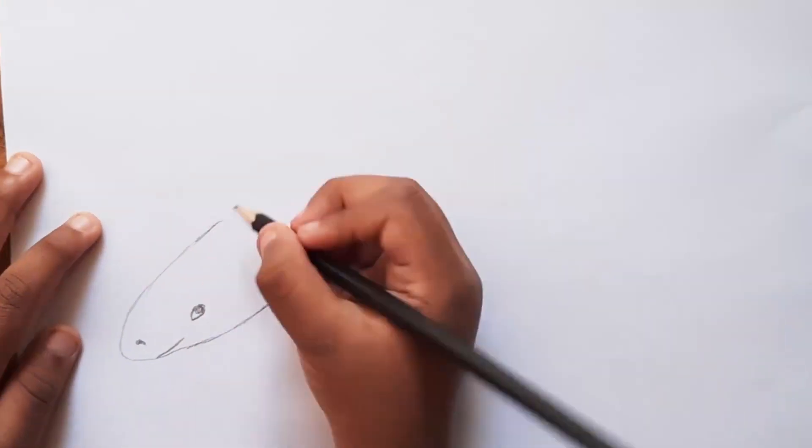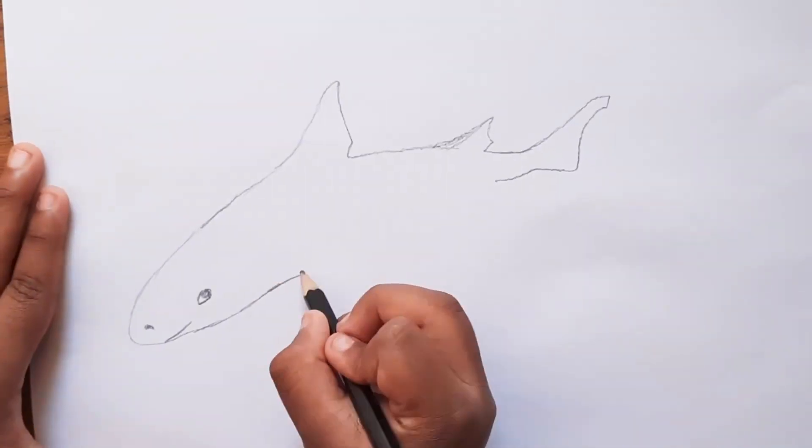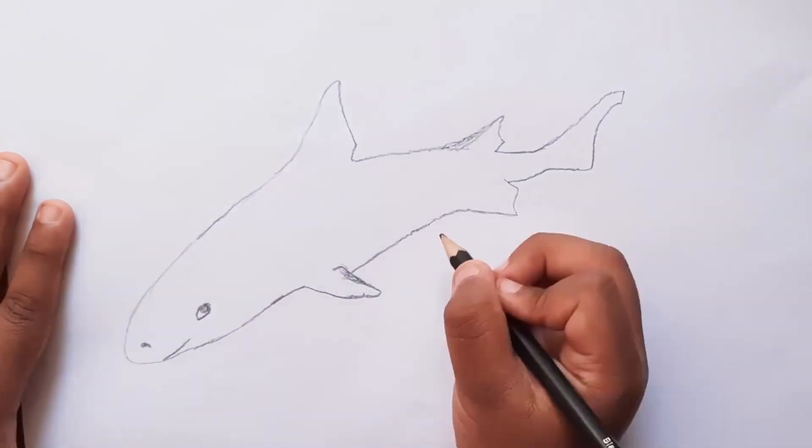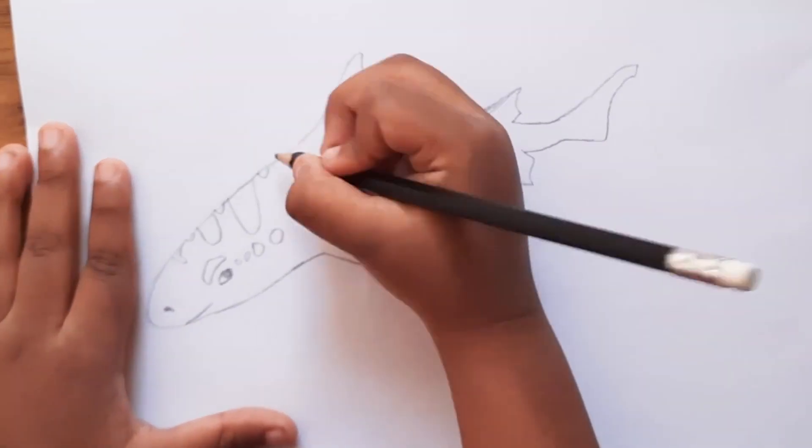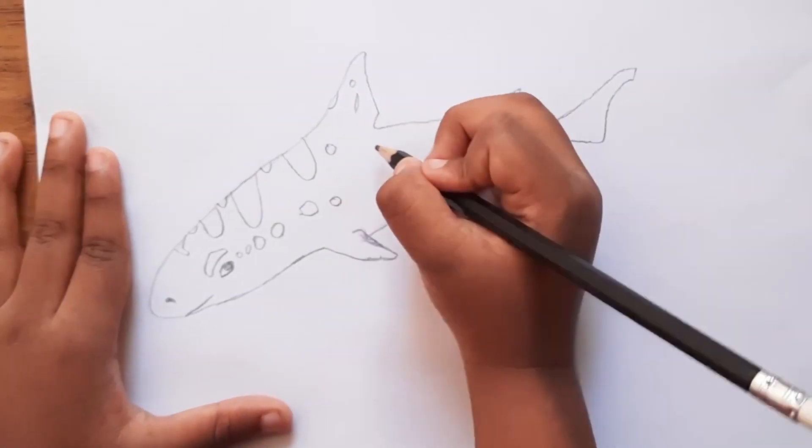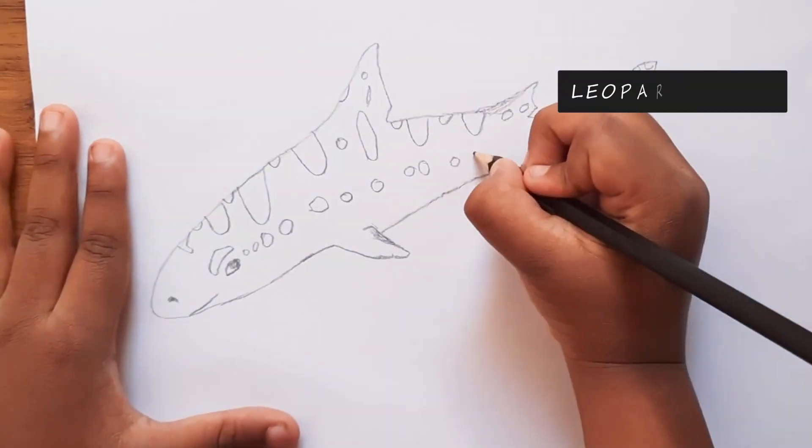The leopard shark. It's a long slim shark with flattened head and short round snouts. They have dark saddles and spots on their body. They like to eat invertebrates and are harmless to humans.